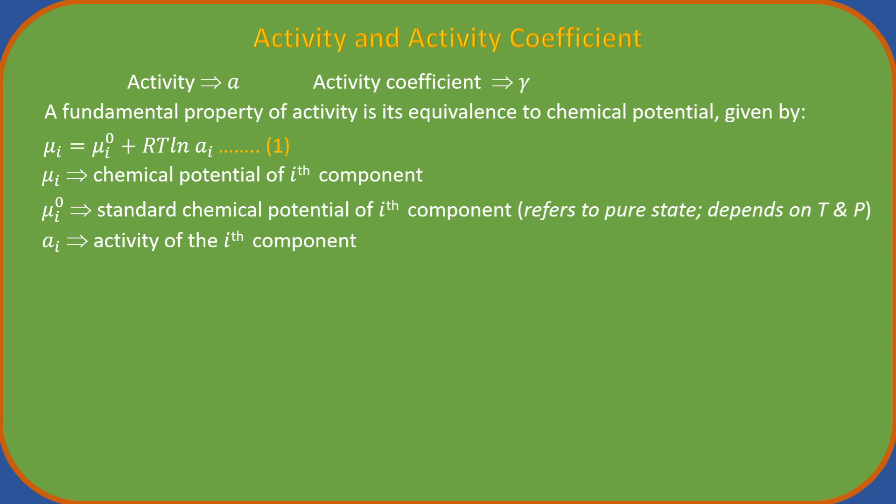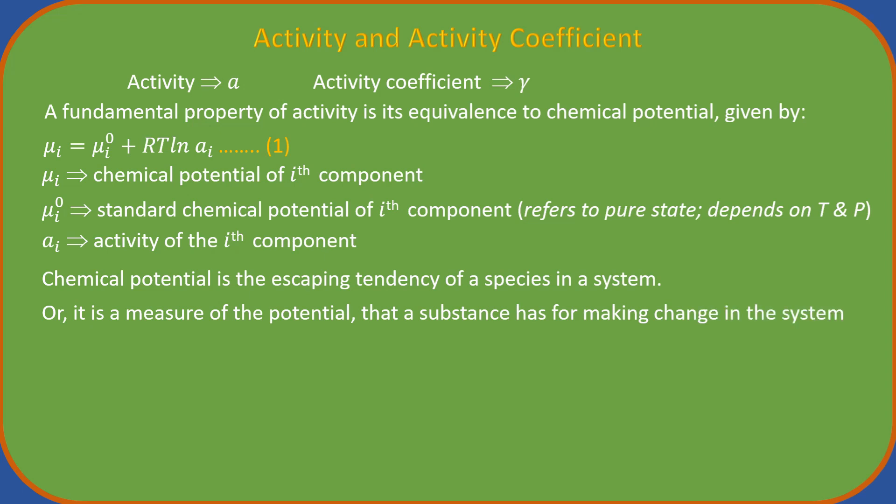Okay, only a brief explanation. In simple language, chemical potential is the escaping tendency of a species in a system. The systems that we consider may be pure substances or mixtures like solutions. Making it more scientific, it is a measure of the potential that a substance has for making changes in the system. You know, potential simply means the capacity to develop into something in future. In the language of thermodynamics, it is the partial molar Gibbs energy.